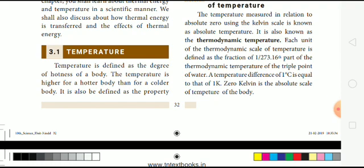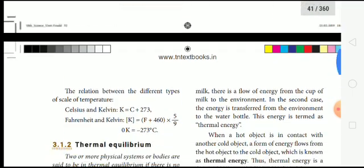The temperature difference of 1 degree Celsius is equal to 1 Kelvin. Zero Kelvin is the absolute zero temperature of a body.